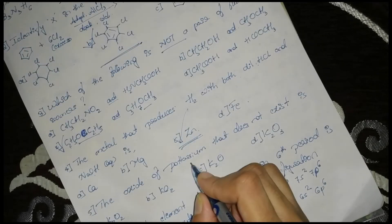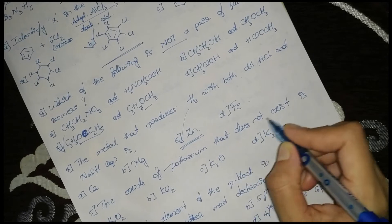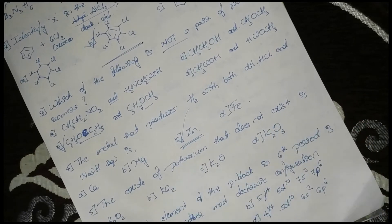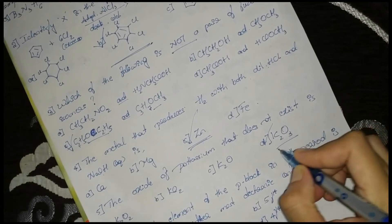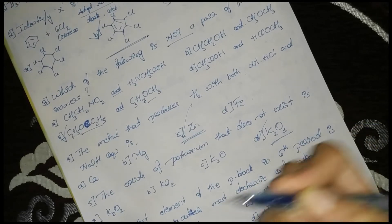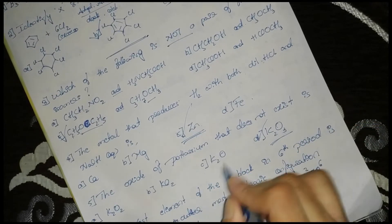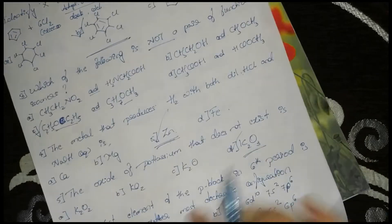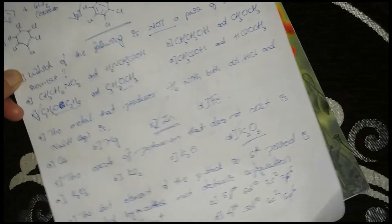Next: the oxide of potassium that does not exist. Option D, K2O3, does not exist. The oxides that do exist are peroxide, oxide, and superoxide.